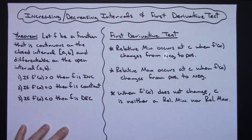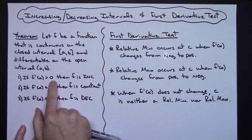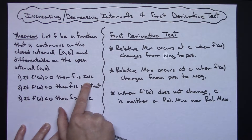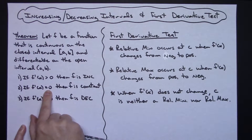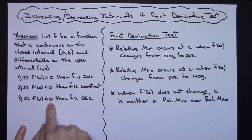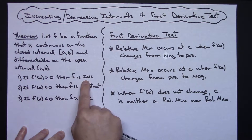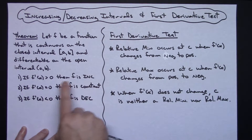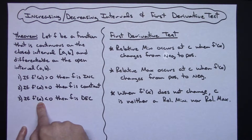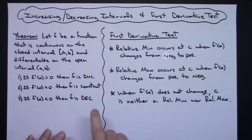If you do have a function that fits that scenario, then if the derivative is greater than zero, the original function is increasing. If the derivative is equal to zero, f is going to be constant, and if the derivative is less than zero, then f is decreasing. This is definitely something you need to memorize — when the derivative is greater than zero the original function is increasing. By calculating that derivative, you can tell what the original function is doing without actually having to graph it.